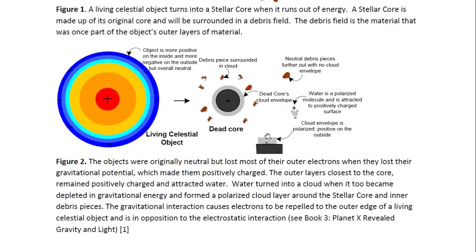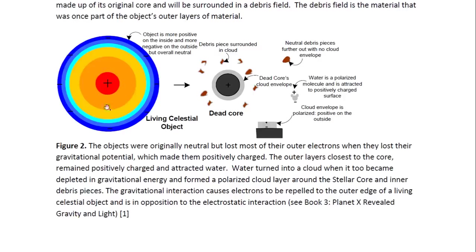Because the object — representing a piece of the object — is positively charged, the negative side of the water molecule would tend to attach to it, and so the outside would be more positively charged. This cloud is then attached to the object. Because it's positively charged, it will attract electrons whenever it enters the negatively charged atmosphere of a living celestial object, and that way it draws electrons towards the stellar core. It is the gravitational interaction that causes electrons to be repelled to the outer edge of a living celestial object.